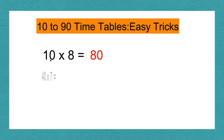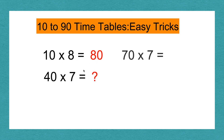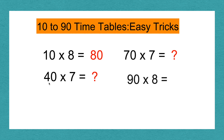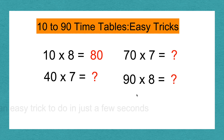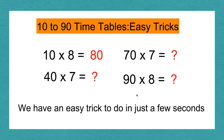It's really easy to solve things like 10 times 8, which equals 80, but it takes us a little more time to solve things like 40 times 7, 70 times 7, and 90 times 8. It's okay to do that, because even I have questions like those. We have an easy trick to do in just a few seconds, so you can solve all of them in the same amount of time.